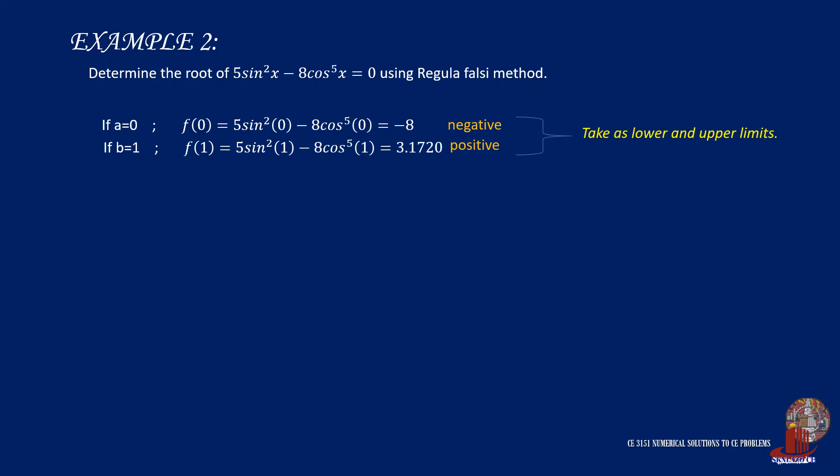Example number 2. Determine the root of 5sin²x - 8cos⁵x = 0 using regula falsi method. So, again, assume initial limits. Let's take a is equal to 0. The function of x turns out to be -8. Work on another limit. Say b is equal to 1. The function of x turns out to be positive 3.1720.